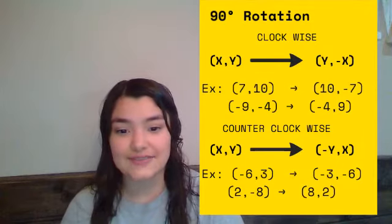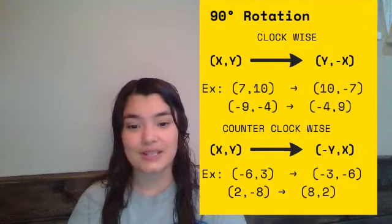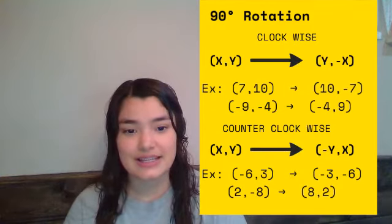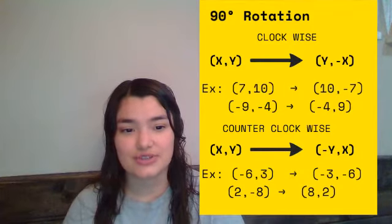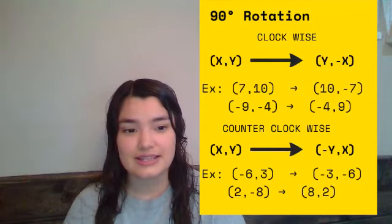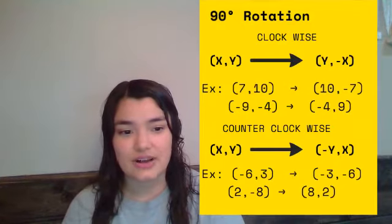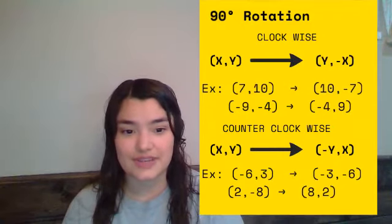Remember that whenever there's a negative sign, it doesn't mean it's a negative, it means it's its opposite sign. So in this case, (7,10) turns into (10,-7) because the 10 takes the place of the y, it just flips, and the 7 is now its opposite sign, so it would be negative 7.